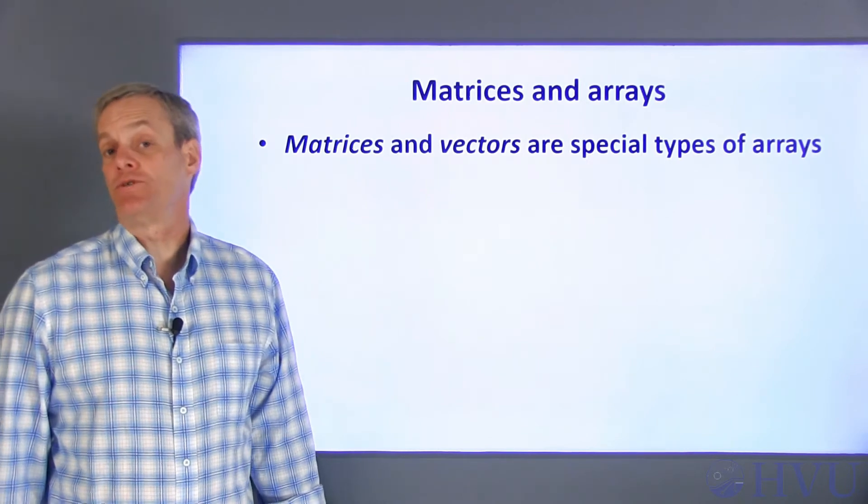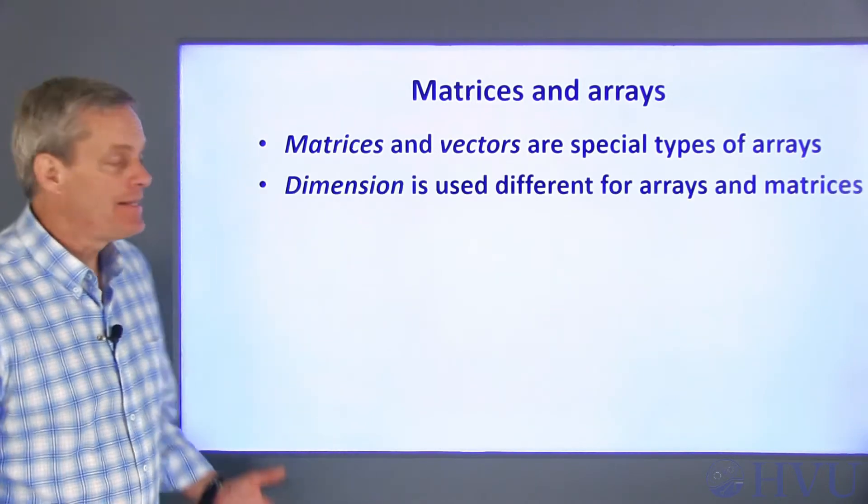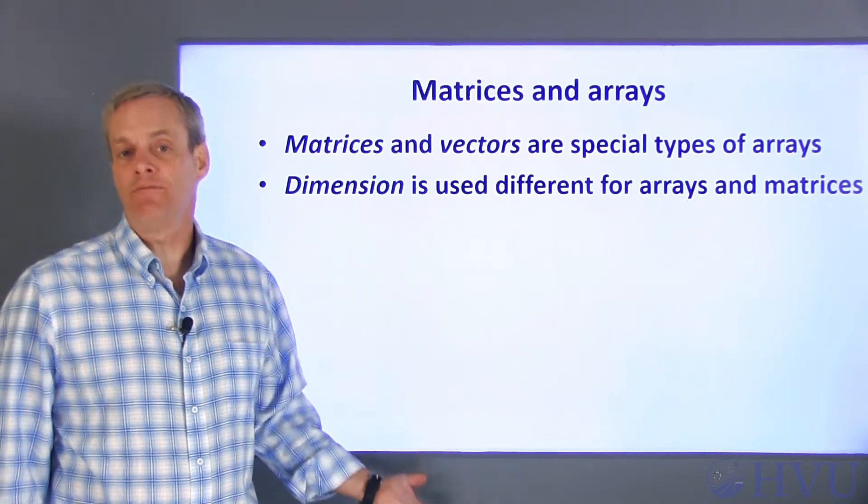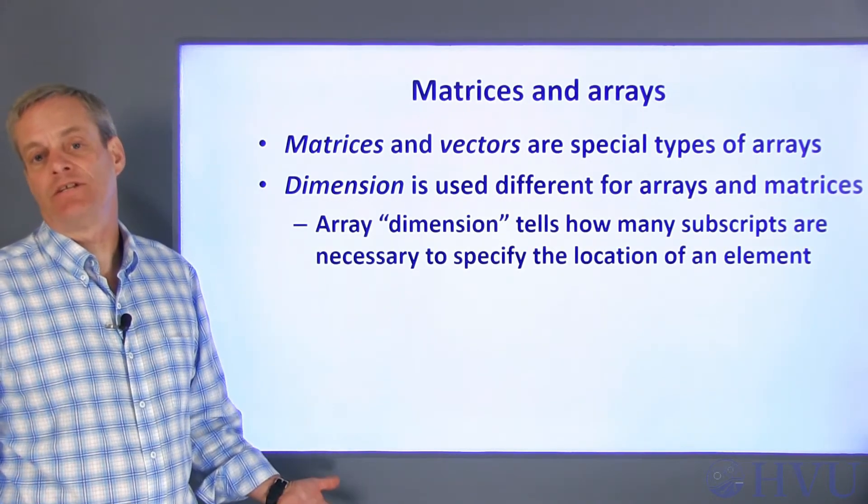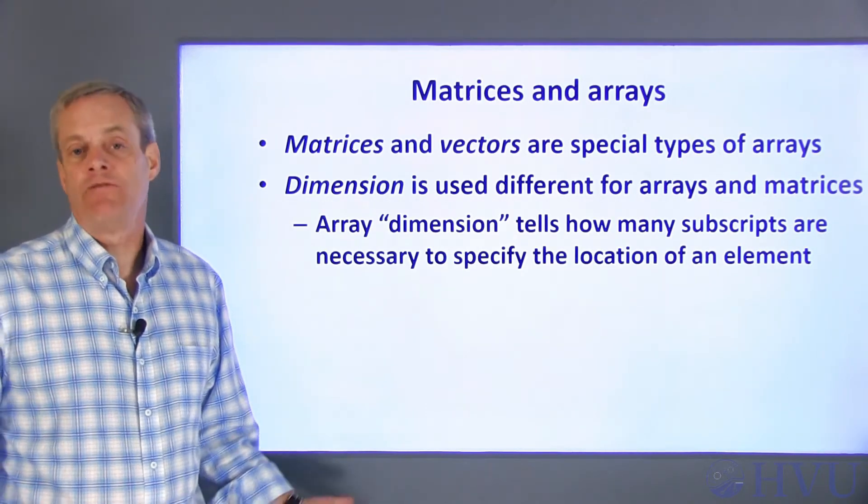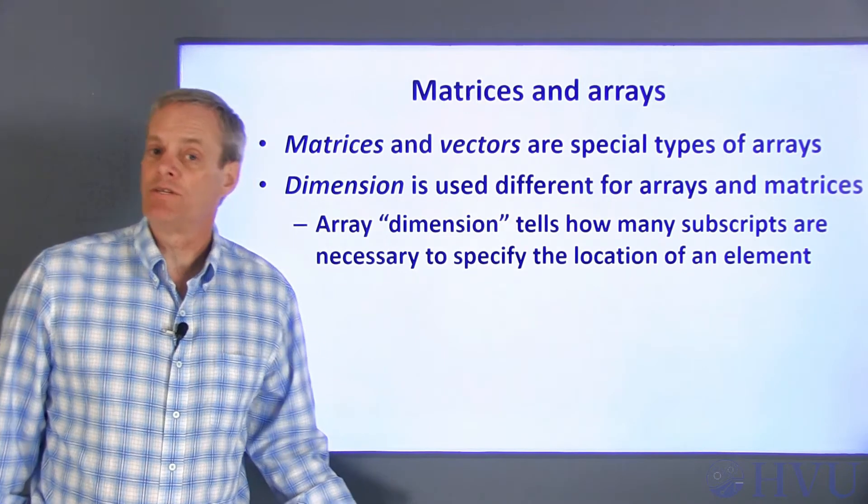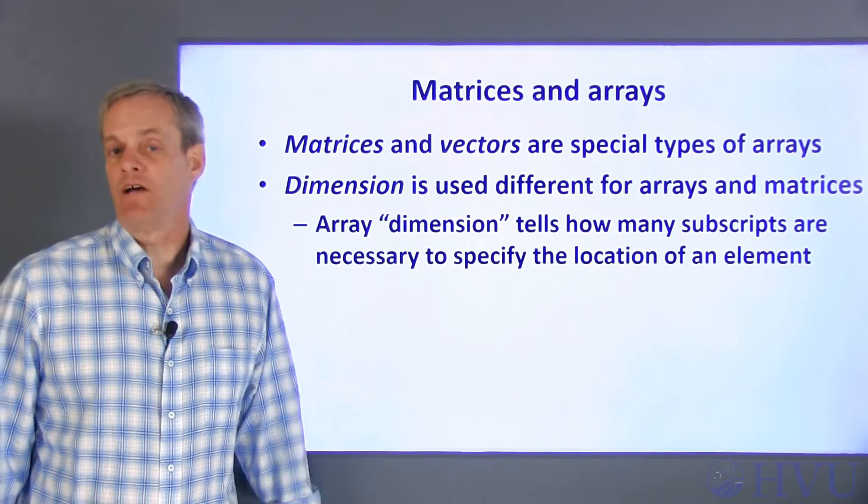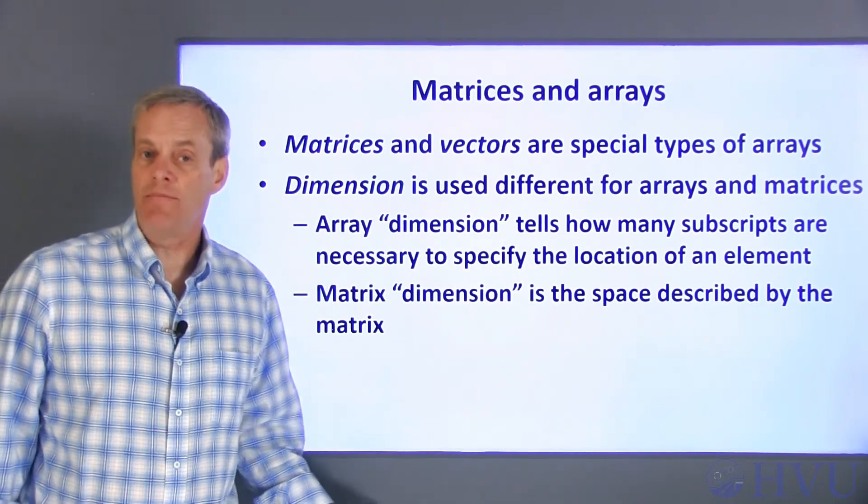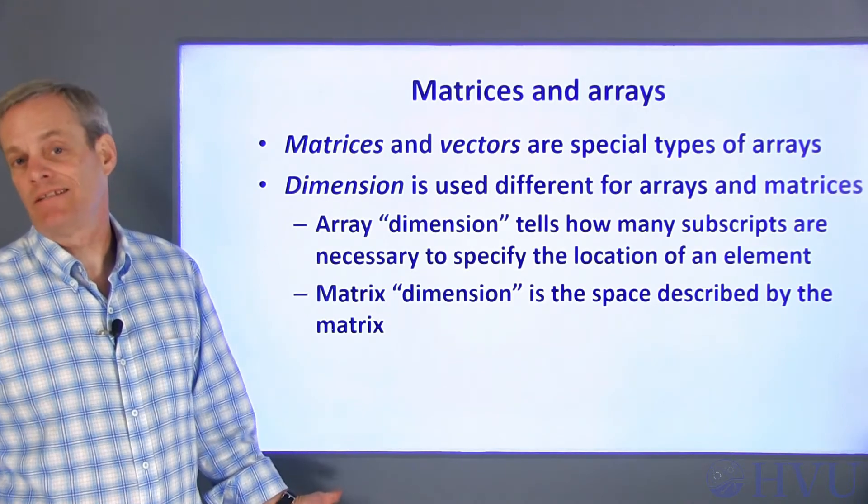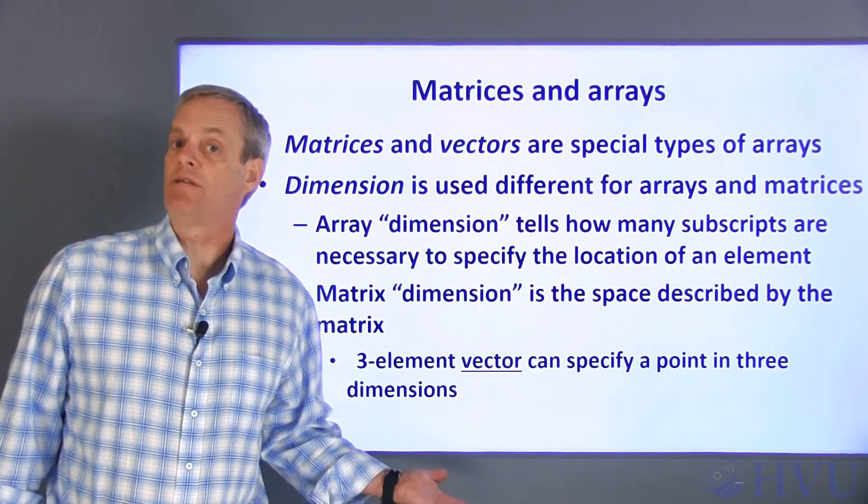Officially, matrices and vectors are special cases of arrays. However, some terminology is used differently when referring to arrays than when it's applied to matrices. An example of this is the term dimension. Dimension means something different depending on whether we're referring to a matrix or to an array. For an array, the dimension tells us how many subscripts are necessary to specify the address of a particular element. A one-dimensional array requires a single subscript, which gives the position of an element in the list. Two-dimensional array elements require two subscripts to describe their location, the row and the column number. Higher dimensional arrays follow the same pattern. However, a matrix dimension tells you something about the properties of the system being described. Matrices and vectors are generally referred to in terms of the space that they're describing. For example, a three-element vector can be used to specify the x, y, and z coordinates of a point in three-dimensional space.